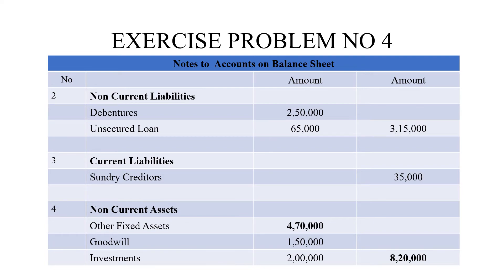Current liabilities: sundry creditors amount to 35,000 rupees. For non-current assets, these are assets held for more than one year. Fixed assets - for example, land - won't depreciate in profit terms. That amounts to 4,70,000 rupees. Goodwill is an intangible asset and also falls under non-current assets.